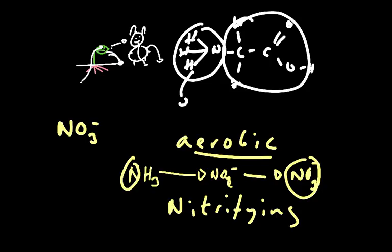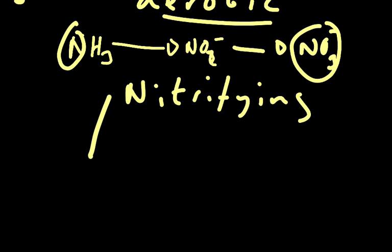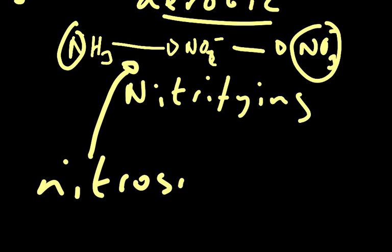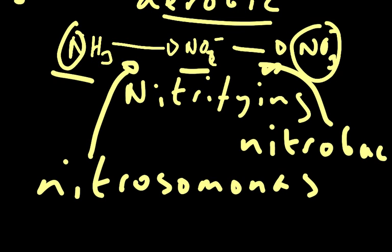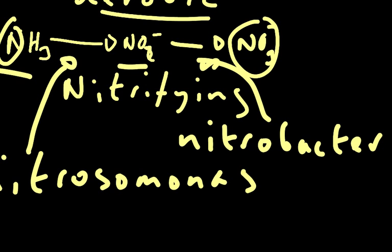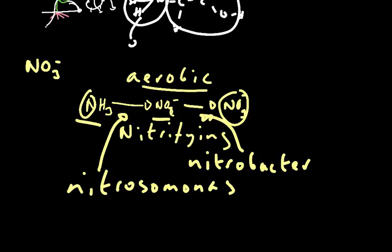You do have to know the names of these two nitrifying bacteria. The first one is Nitrosomonas, which does the ammonia to nitrite step, and then we have Nitrobacter, which does the nitrite to nitrate step. Both of these are aerobic bacteria and both are chemoautotrophs — they're using the energy from the breakdown of ammonia to nitrite, in the case of Nitrosomonas, and nitrite to nitrate, in the case of Nitrobacter, to drive the fixation of carbon dioxide from the air, because these are chemoautotrophs rather than photoautotrophs like plants.